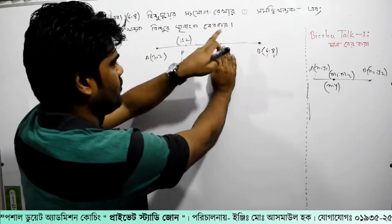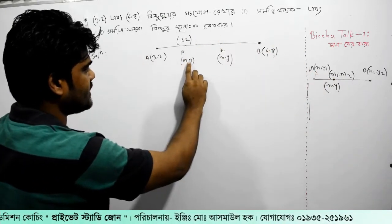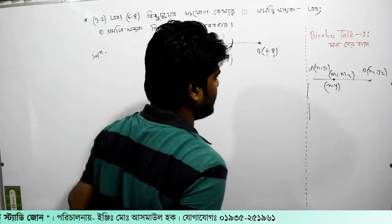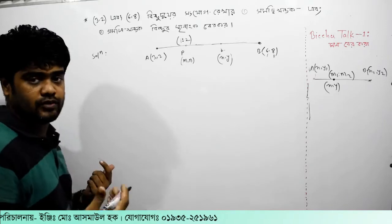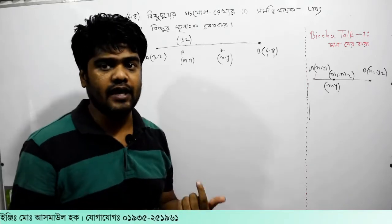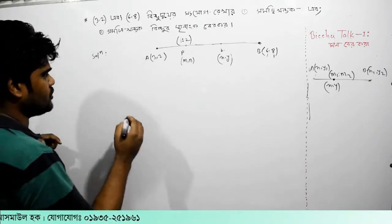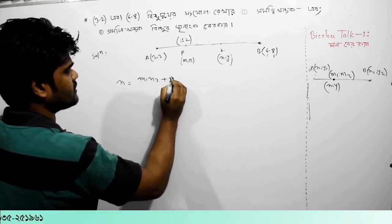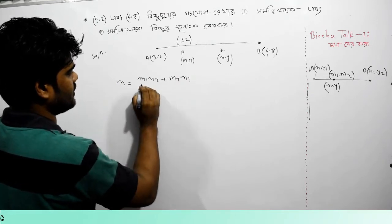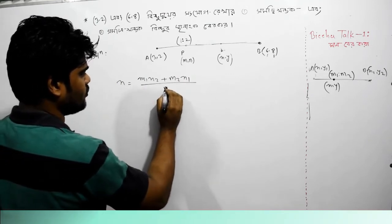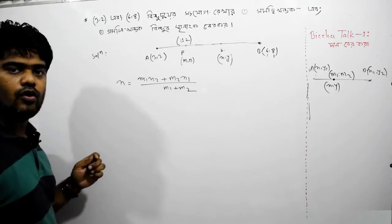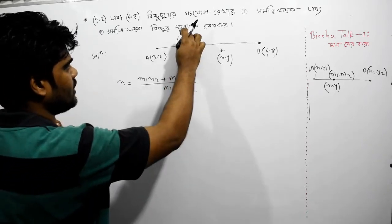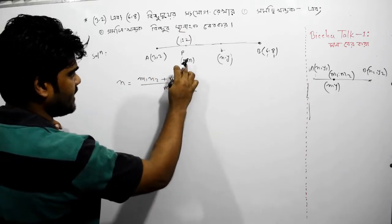এখন দেখেন আমি যদিতে তপ আফকরে রাখি তালে দেখেন তিনটা হলো আমার কি এমটো — আরে এটা আমার কি x, এটা আমার কি x, এটা আমার কি থিকা — x এর মাম্বের গরো সূত্র তালো চলেন মাম্বের গড়ি এটা আমার কি।